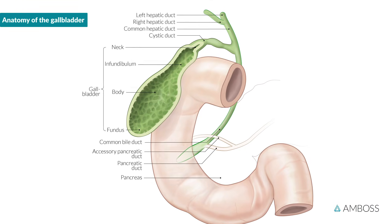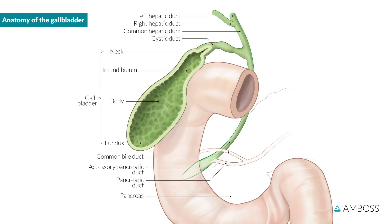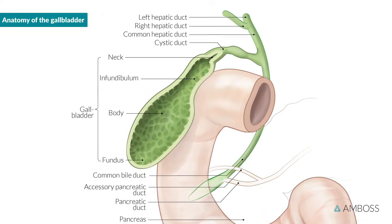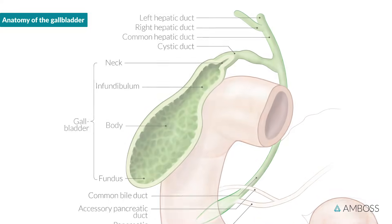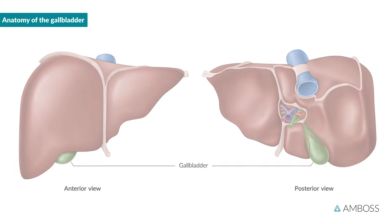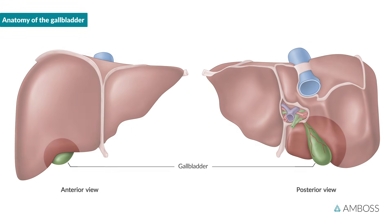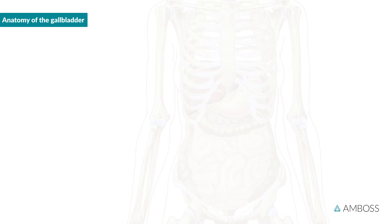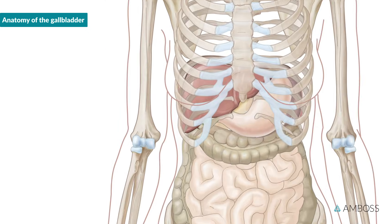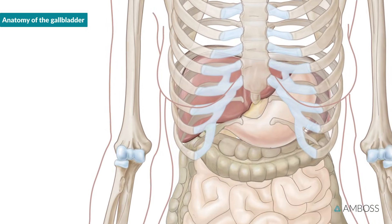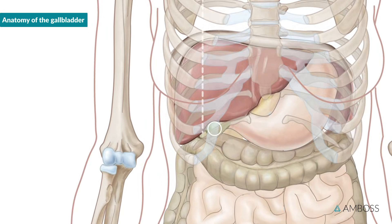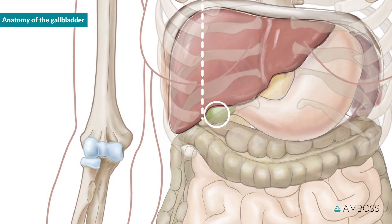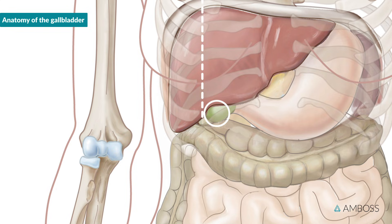The gallbladder is a pear-shaped, hollow, fluid-filled organ that lies against the visceral surface of the liver. The rounded lower end of the gallbladder, the fundus, projects just below the right costal margin, a little medial to the mid-clavicular line.